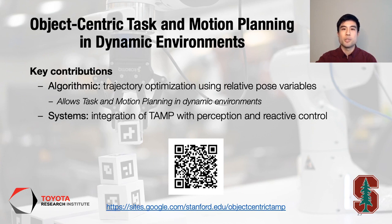To summarize, we have two key contributions in this work. From an algorithmic point of view, we introduce a new trajectory optimization formulation using relative pose variables. This allows task and motion planning to handle dynamic environments where objects are moving and perception and control are inaccurate. From a systems point of view, we implement a system architecture that integrates task and motion planning with perception and reactive control, so that we can now do task and motion planning on a real robot, where the environment state is visually tracked with RGBD cameras.